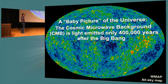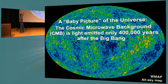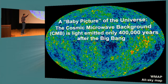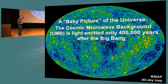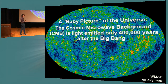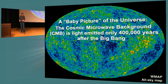What you're looking at here is actually a baby picture of the universe — an all-sky map of the cosmic microwave background, this light left over from the Big Bang, light emitted only 400,000 years after the Big Bang. We're getting an image of what the universe looked like at that time. It was a completely different state: there were no stars, there were no galaxies — these are fluctuations of the very early universe.